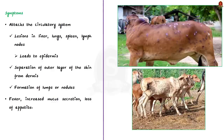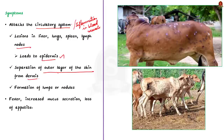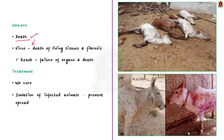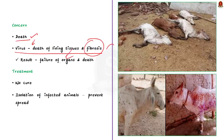LSDV attacks the circulatory system of an animal and causes inflammation of blood vessels and lesions in organs like the liver, lungs, spleen, and lymph nodes. This causes the outer layer of the skin (epidermis) to separate from the dermis (inner layer), leading to the formation of lumps or nodules on the animal's body. Other symptoms include fever, increased mucus secretion, and loss of appetite. The disease can lead to death; post-mortem findings show the virus caused death of living tissues in local areas and fibrosis in various organs, leading to organ failure. Since it is a viral disease, there is no cure, and the spread is controlled by isolating the infected animals.